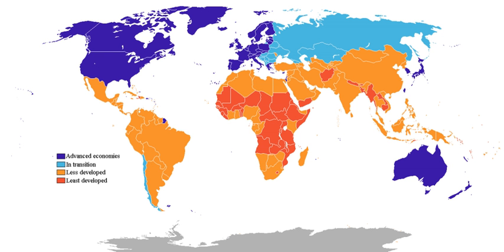As of 2015, advanced economies comprise 60.8% of global GDP based on nominal values and 42.9% of global GDP based on purchasing power parity according to the International Monetary Fund. In 2017, the ten largest advanced economies by GDP in both nominal and PPP terms were Australia, Canada, France, Germany, Italy, Japan, South Korea, Spain, the United Kingdom, and the United States.